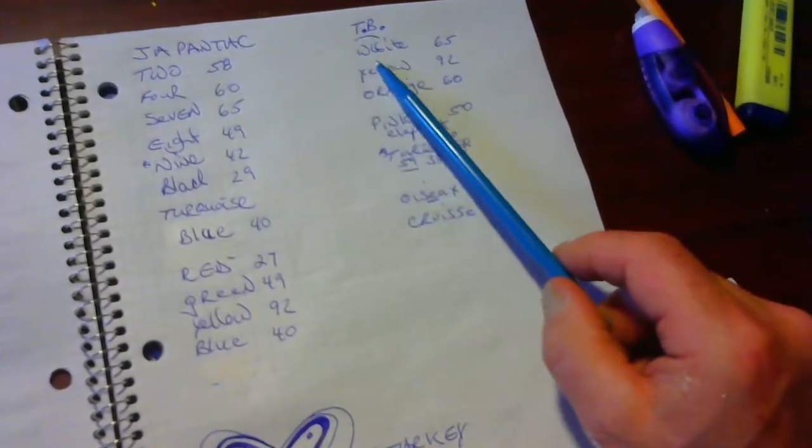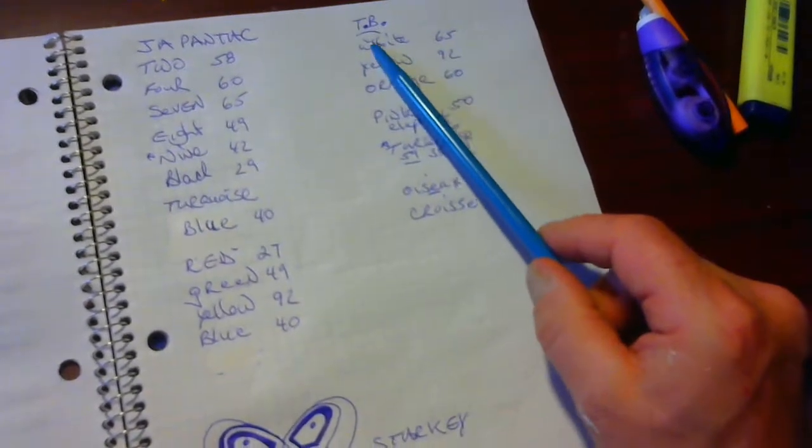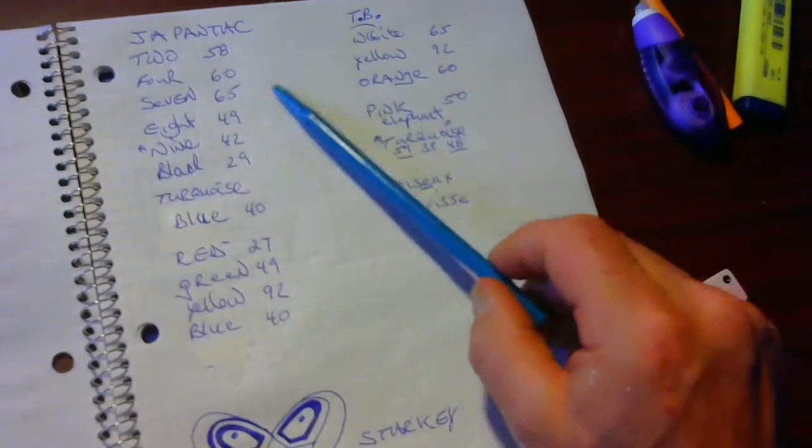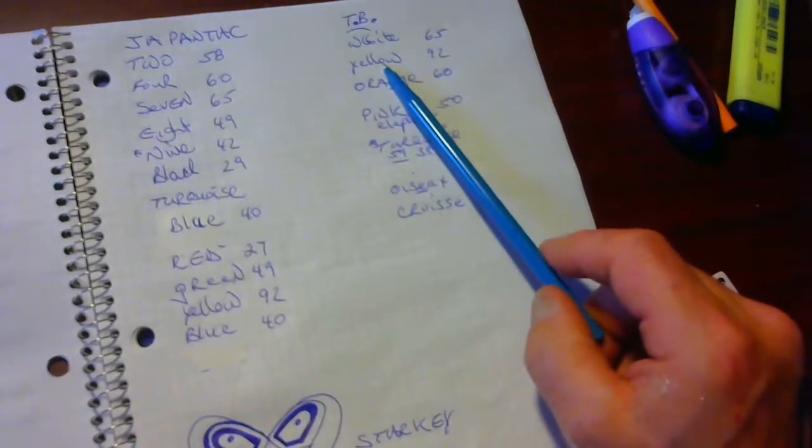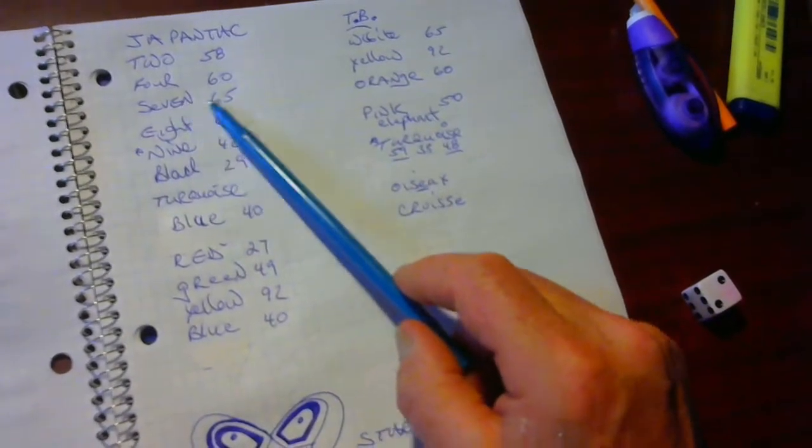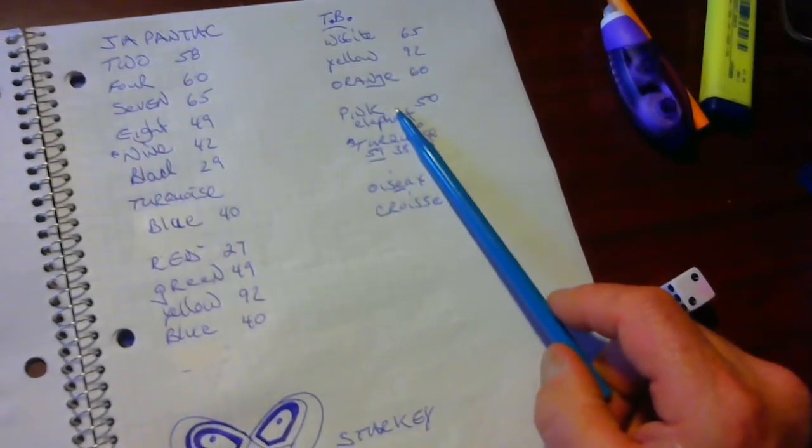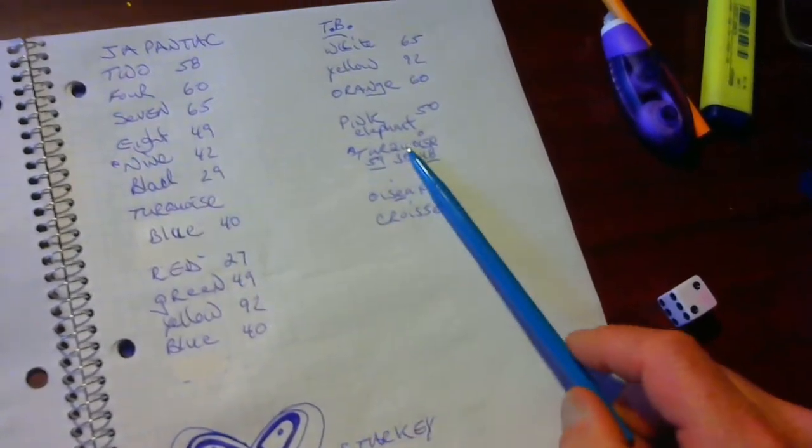Two, white. They say inside the creation of white is black. Four, yellow. Seven, orange. Eight, pink. Nine, turquoise.